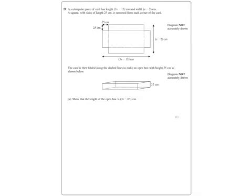OK, we've got a box and we've got lengths given in algebra, but we've got bits cut out so you can fold it out as kind of a net, isn't it? Alright, show that the length of the open box is 3x minus 63.